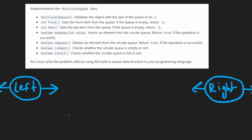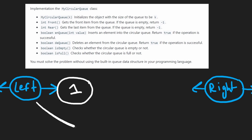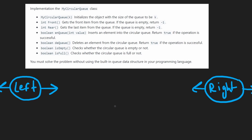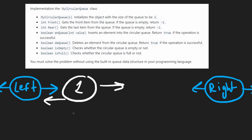Suppose we want to add value one. We create a new linked list node. The left dummy node's next pointer, instead of pointing at the right node, will now point at the new node. The previous pointer of the right dummy node, instead of pointing at left, will now point at the new node as well. The new node's pointers go to the right node and back to the left node.